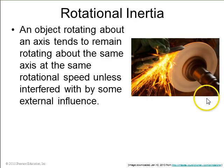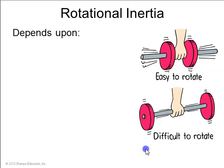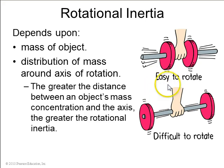So any object that's rotating tends to want to keep rotating unless acted upon by some external influence, and that's called rotational inertia. It has a symbol I, and it depends not just on the mass, but also the distribution of the mass around the axis of rotation. So, for example, this dumbbell has its mass close to the axis of rotation as I wiggle it, and so it's easy to rotate. But if you take that same mass and move it further away from the axis, it's harder to rotate, so it has a greater rotational inertia.